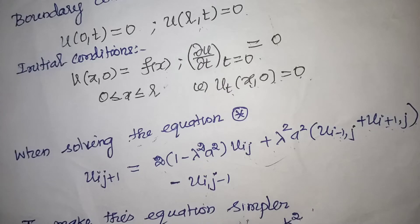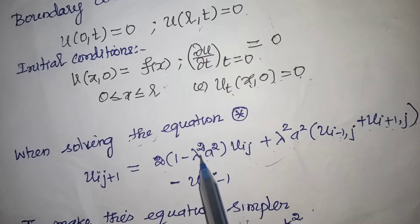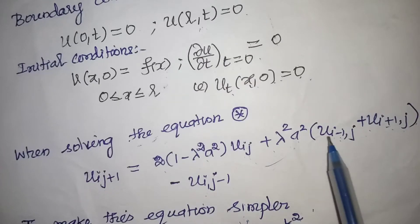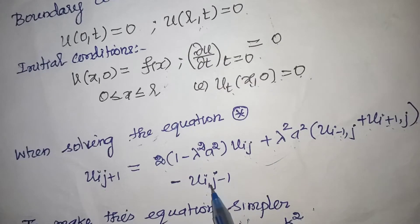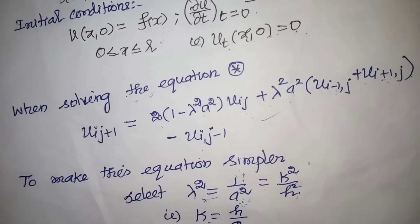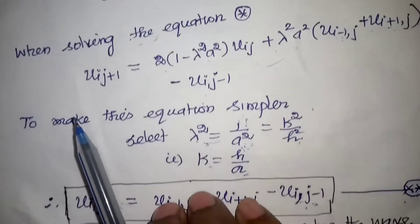Substituting λ² = 1/a² into the formula: the a² terms cancel, making the coefficient of u(i,j) equal to zero, so that term drops out. We are left with only the remaining two terms plus the third term — totally three terms after simplification.